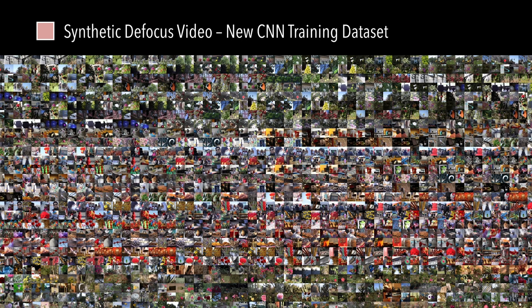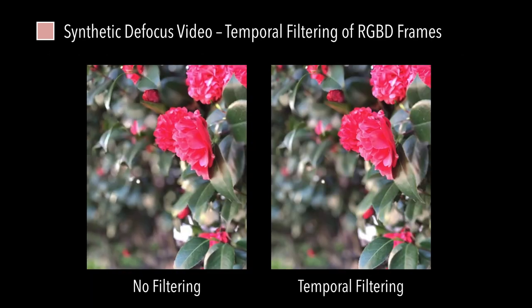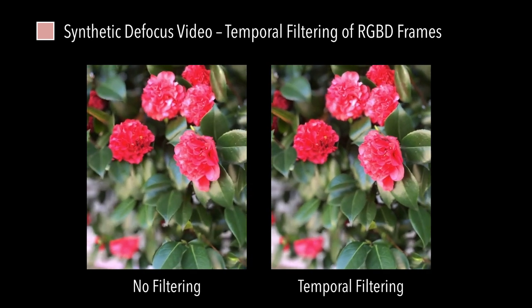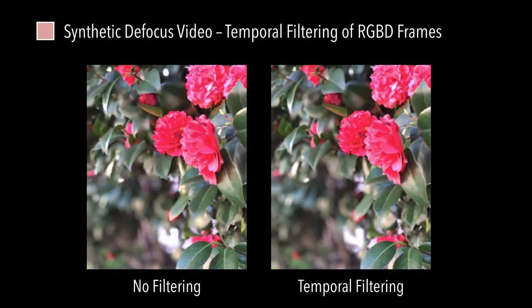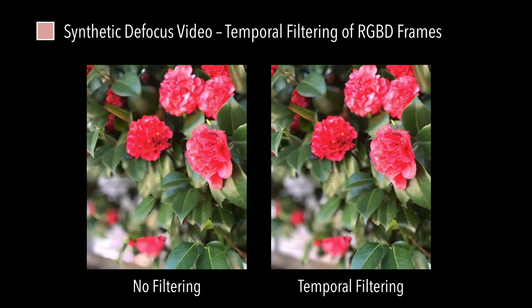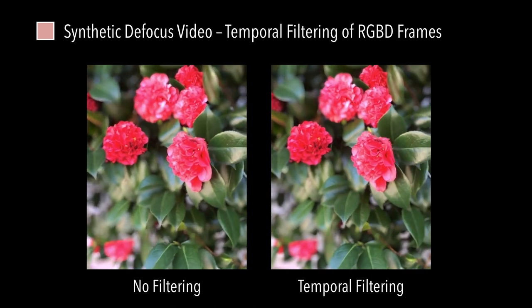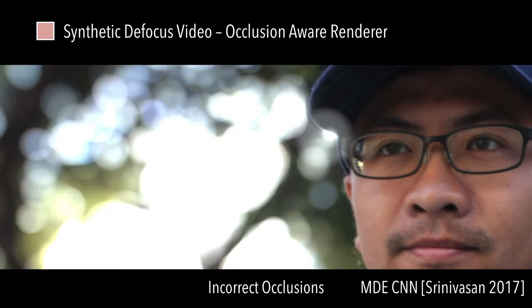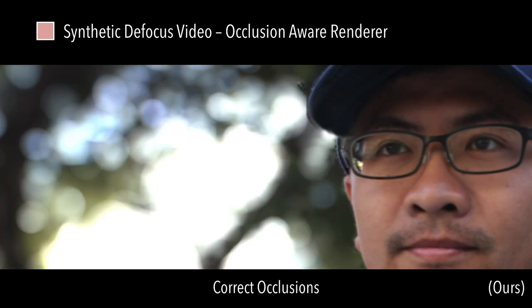Image pairs are shot with small and large lens apertures, as in previous work. We also shoot photo triplets with varying focus to improve the quality of CNN depth estimates. Naively processing each frame separately gives unacceptable defocus flicker, as you can see on the left. Our temporal filtering on the right is essential. We improve on the defocus renderer previously used to train a similar kind of network, upgrading it to handle occlusions correctly.